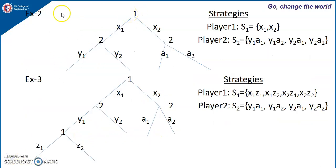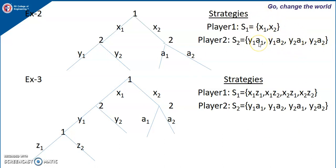If you consider the game tree displayed here, for player 1 the strategies are x1 and x2 because he is playing only at one point, which is after the empty history. After empty history, player 1 will be either playing x1 or x2. Player 2 will be playing at two points: one is after the history x1, another is after the history x2. So the strategy for player 2 will have two entries: the first entry specifies the action after history x1 and the second entry specifies the action after history x2. Since player 2 has two choices at each of x1 and x2, that gives 2×2 = 4 strategies: (y1,a1), (y1,a2), (y2,a1), (y2,a2).